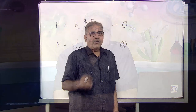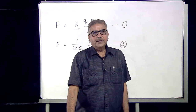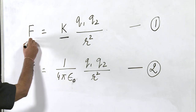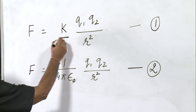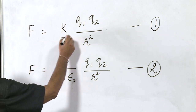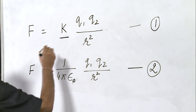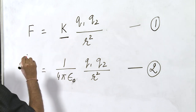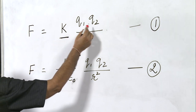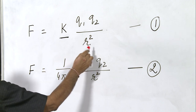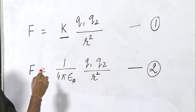Now we will explain it on the blackboard. We write Coulomb's law in mathematical form: F, the force between two charges, is equal to K Q1 Q2 upon R square. Here K is the constant of proportionality, Q1 and Q2 are the two charges, and R is the separation between them.